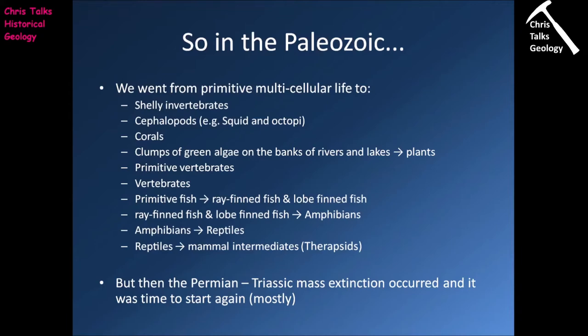So what was happening with life during the Paleozoic? During the Paleozoic we went from relatively primitive soft-bodied multicellular life and we saw quite a diversification of species as we made our way from the Cambrian through to the Permian. Some of the important changes included the appearance of the shelly invertebrates in the Cambrian as part of the Cambrian explosion, and we also saw the appearance of the cephalopods — the group that includes organisms like squid. One subphylum, the Ammonoidea, makes its appearance in the Devonian and is going to become very important in the Mesozoic.